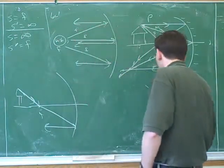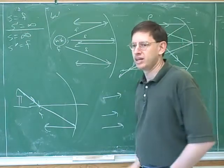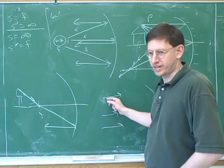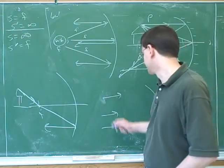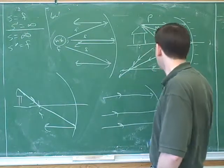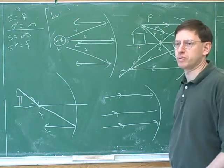Because if the object's at infinity, then all the incoming light rays are parallel. An object that's at infinity is so far away that all the light rays are basically parallel by the time that they get to you. So they're all p-rays? That's good. They're all p-rays, which means they all go out through the focal point.